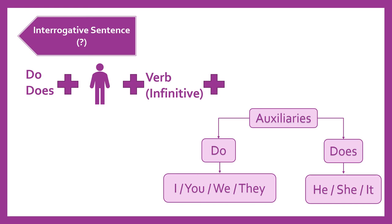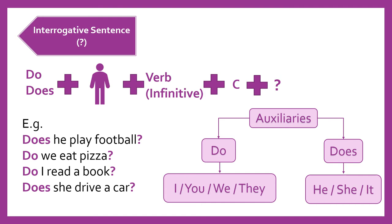Next we write our complement and finally the question mark because this is a question. For example, does he play football? As you can see, we don't add an S to the verb play because this is a question, and we use the auxiliary does because we're using the pronoun he. No vamos a agregar una S al verbo play porque esta no es una oración positiva, es una oración interrogativa. Y también utilizamos el auxiliar does porque estamos utilizando el pronombre he.